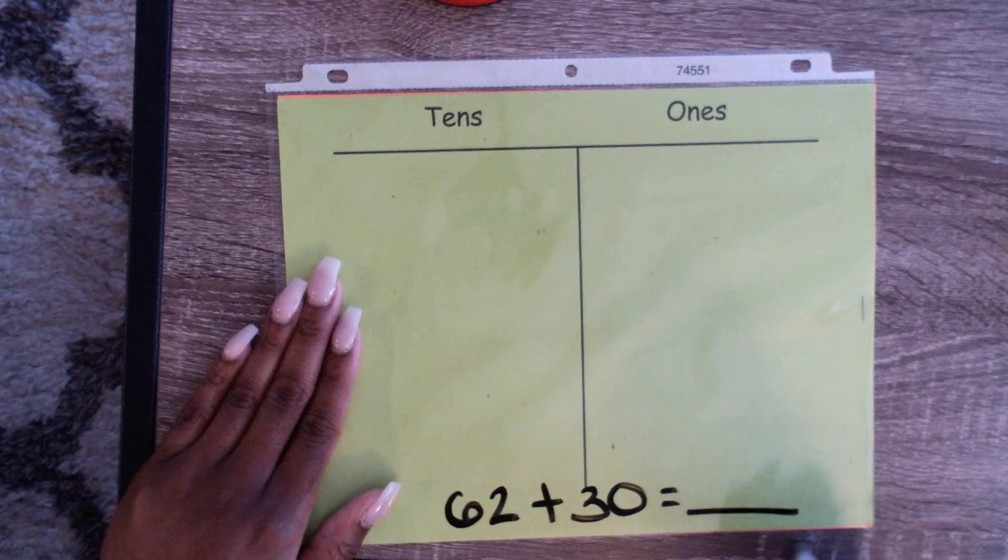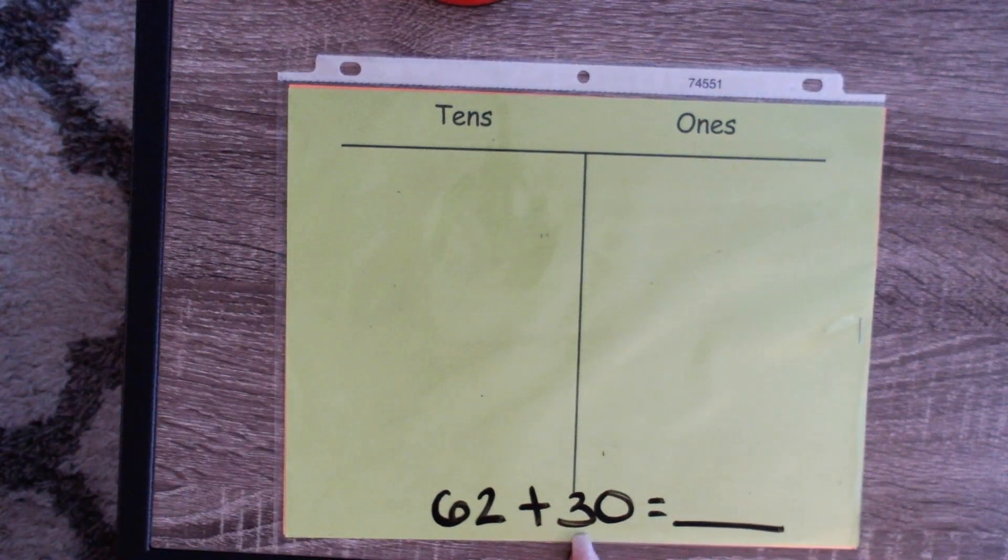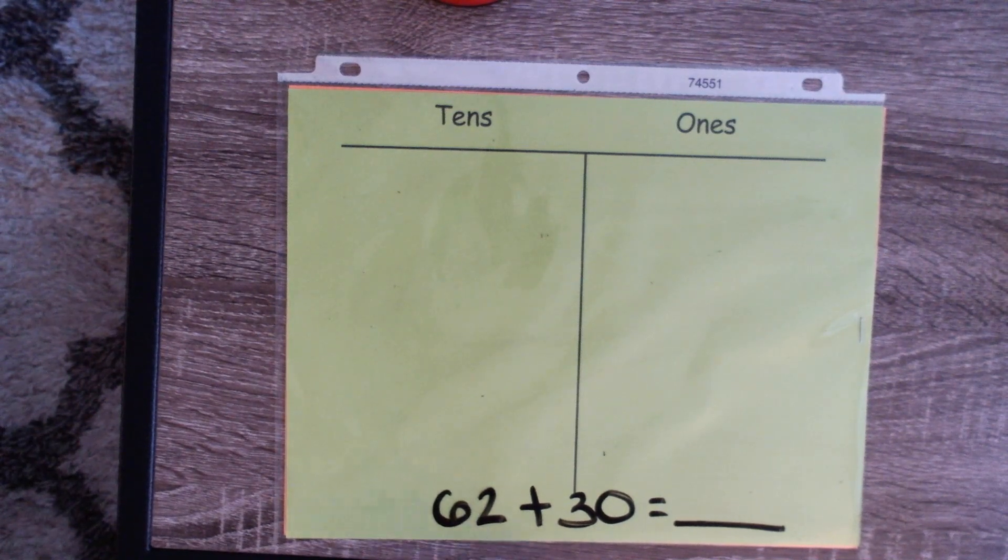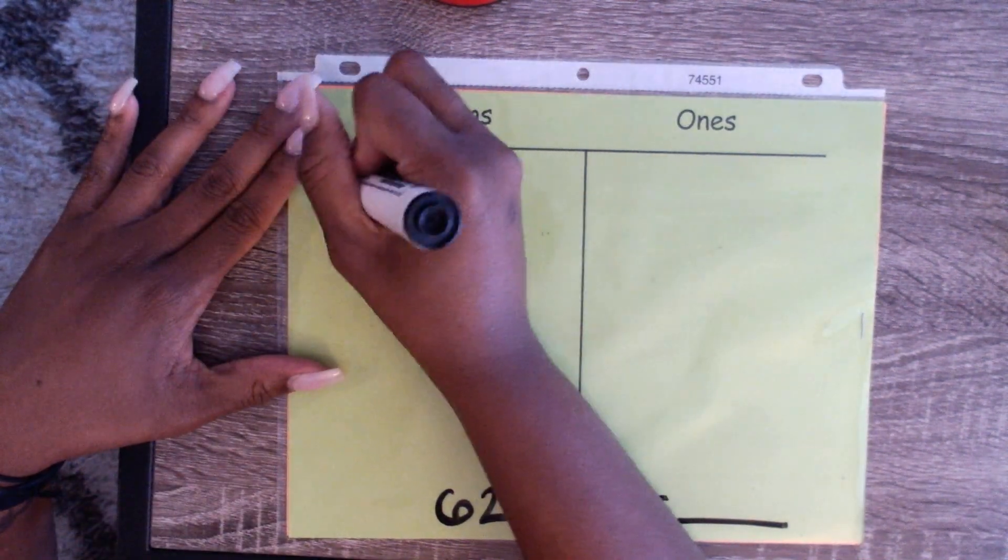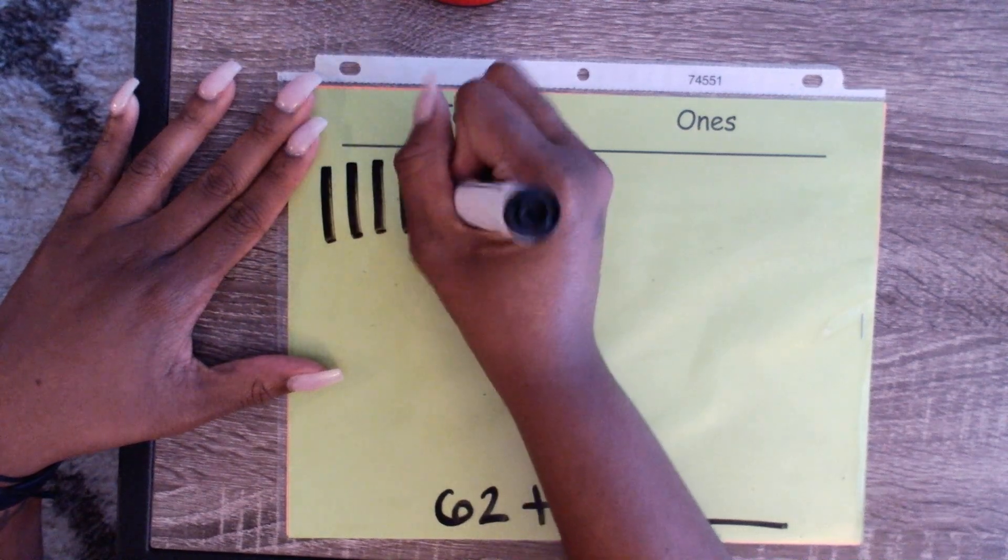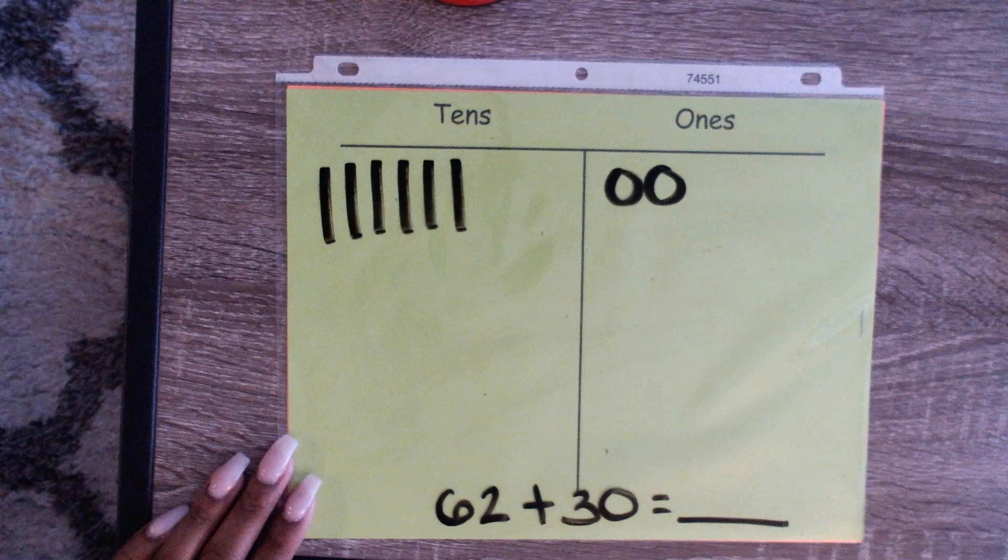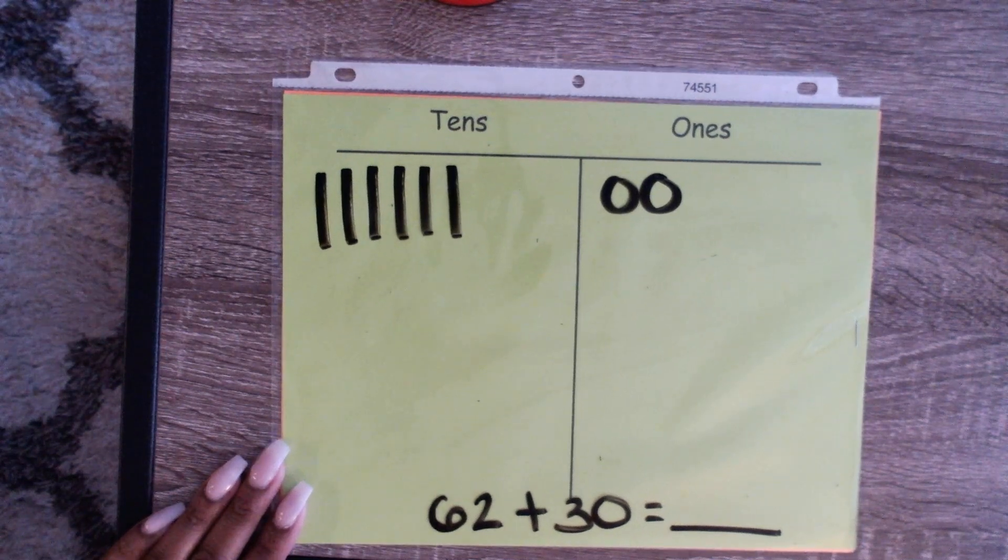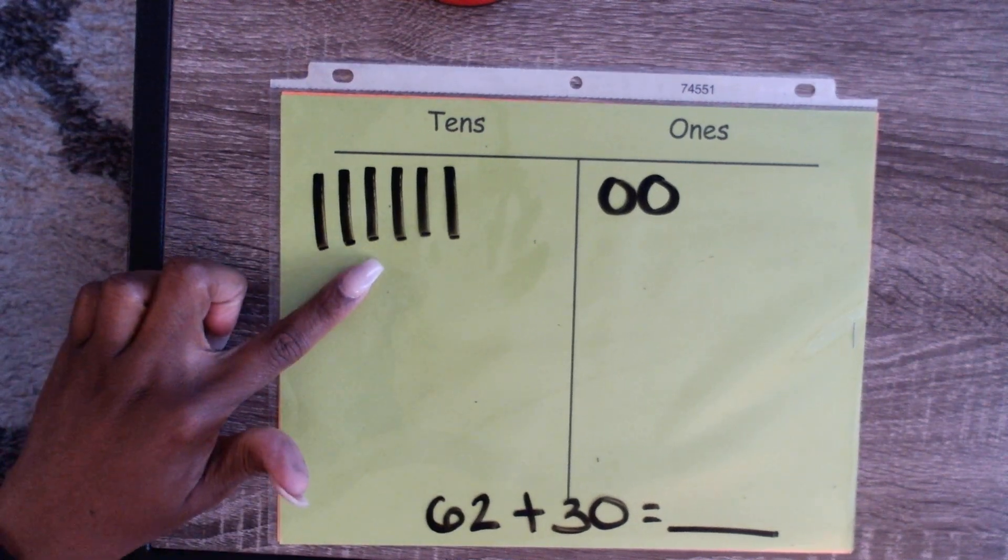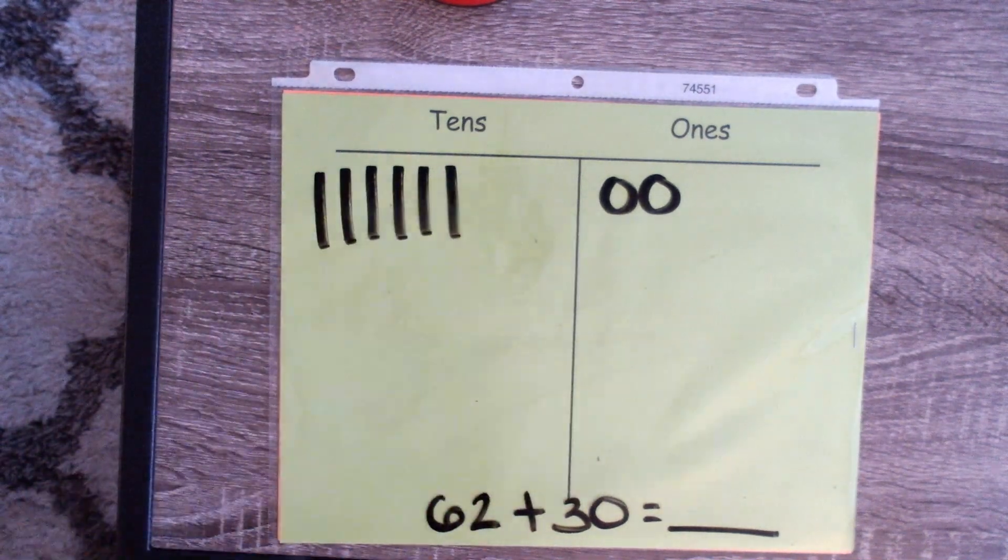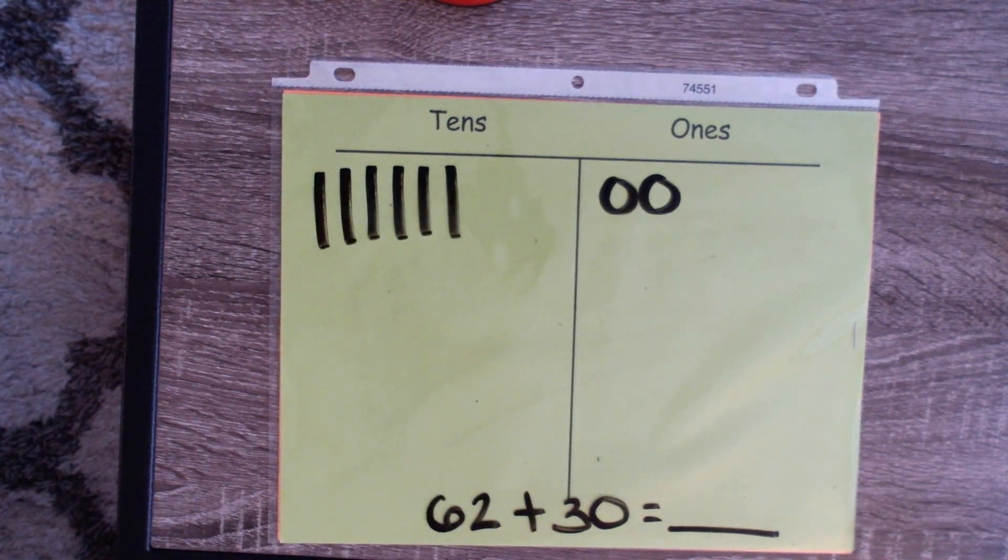I'm going to make an equation: 62 plus 30 equals blank. Now we're going to add a multiple. First we're going to build our number 62. We need 6 tens and 2 ones. One, two, three, four, five, six. One, two. Let's make sure we have 62. Let's count by tens and ones: 10, 20, 30, 40, 50, 60, 61, 62.